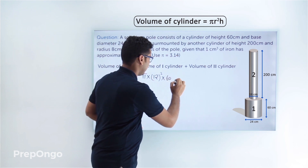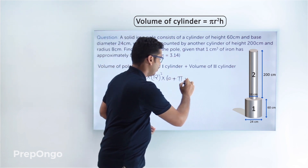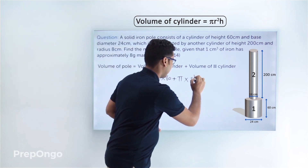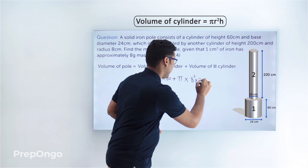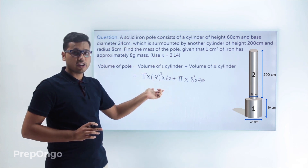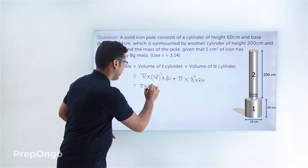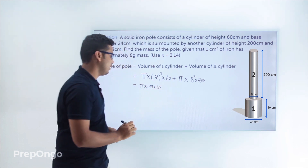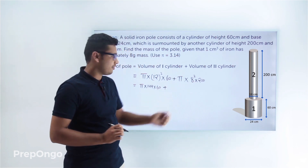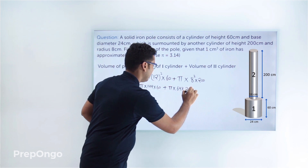Similarly, the volume of the second cylinder is π × 8² × 200, since its radius is 8 centimeters and height is 200 centimeters. Computing the squares: 12² = 144 and 8² = 64, giving us π × 144 × 60 + π × 64 × 200.